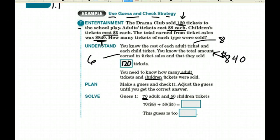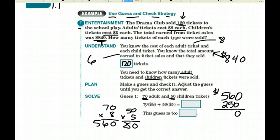First guess, I'm going to guess they sold 70 adult tickets and 50 children's tickets. So 70 times 8 and 50 times 5. 70 times 8, we know 8 times 7 is 56, so we got 560. We want to add that to 50 times 5, which gives us 250. We have $560 in adult tickets and $250 in children's tickets. In total, we have $810. We know that they actually sold $840 worth of tickets, so this guess is too low.